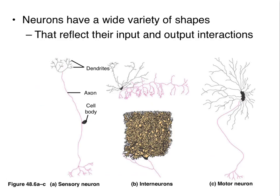Neurons come in lots of different shapes. We're not going to have a lot of time to look at all the different shapes, but in general, dendrites will receive a signal, a long axon will transmit that signal, and ultimately the axon will end in axon terminals — not dendrites — that will allow that signal to be transmitted from one cell to the next.